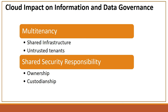The cloud impact on information governance and data governance is especially significant in terms of multi-tenancy and shared security responsibilities, where there is a very thin line between ownership and custodianship. Multi-tenancy has complicated security implications on the infrastructure. When data is stored in the cloud, especially the public cloud, it is stored on a shared infrastructure with others — including possibly untrusted tenants. Even in a private cloud environment, it is stored and managed on infrastructure shared across different business units, which may have different governance needs. So multi-tenancy has an impact in both public and private cloud.